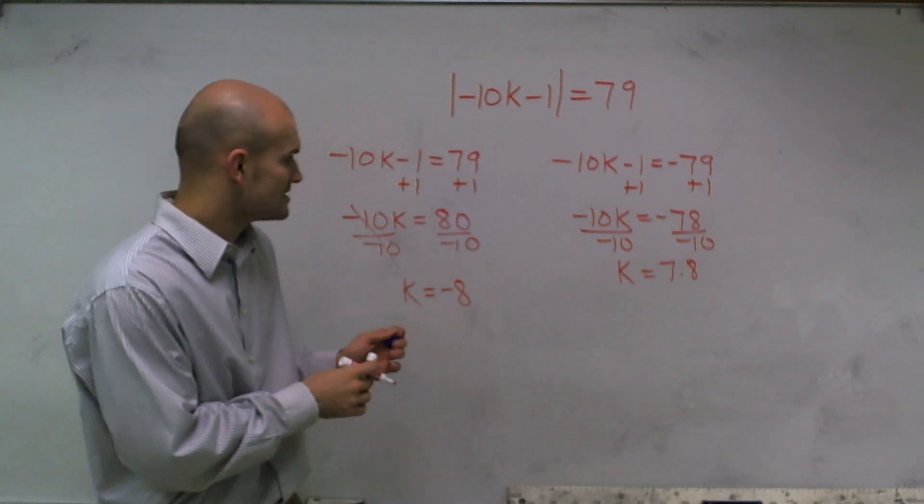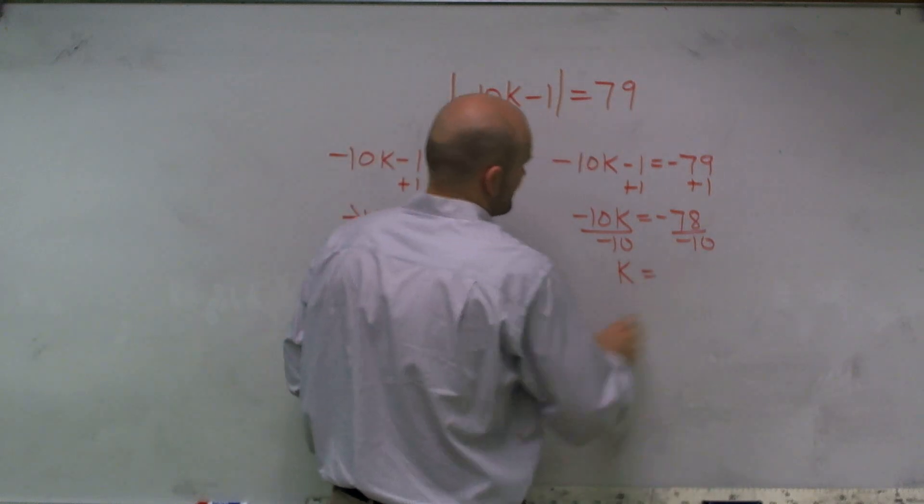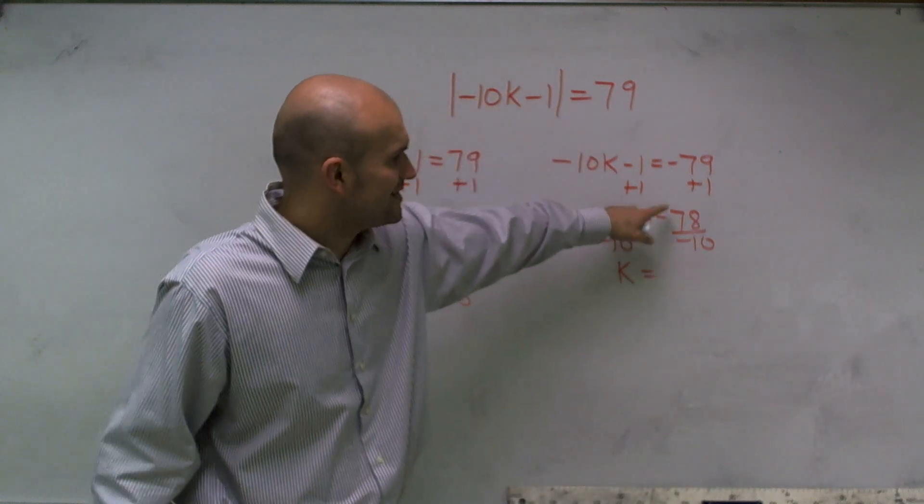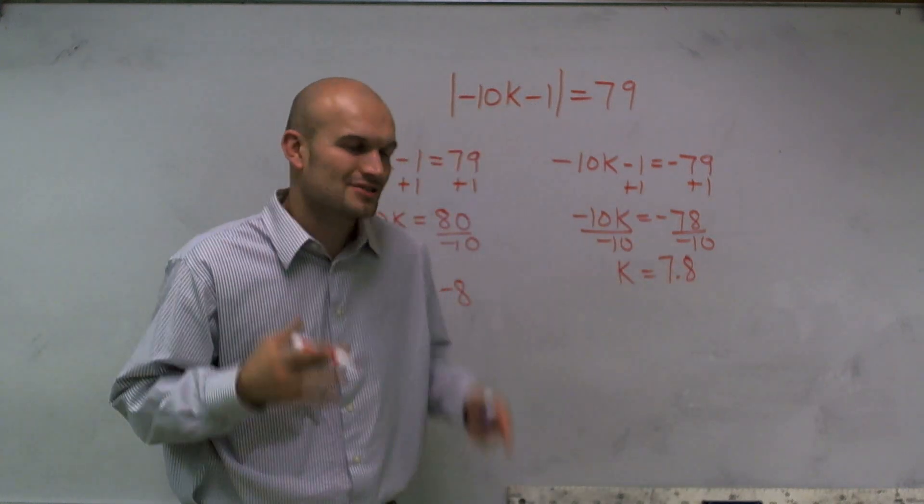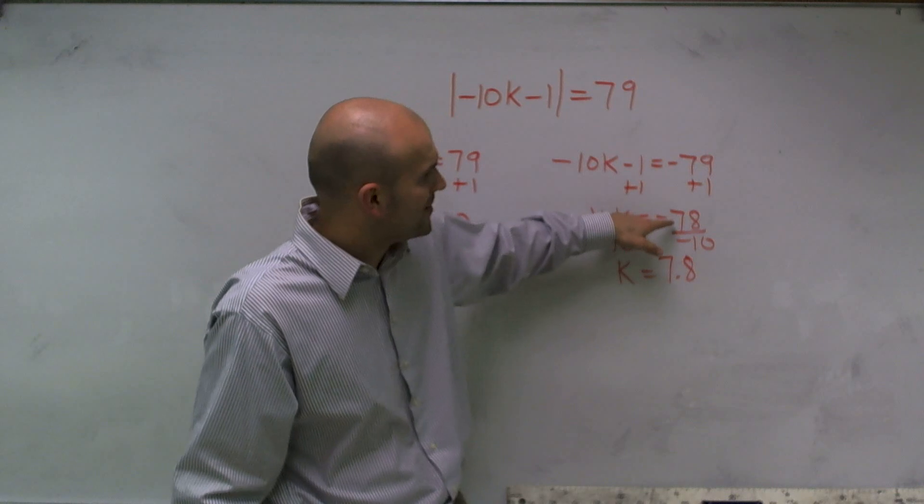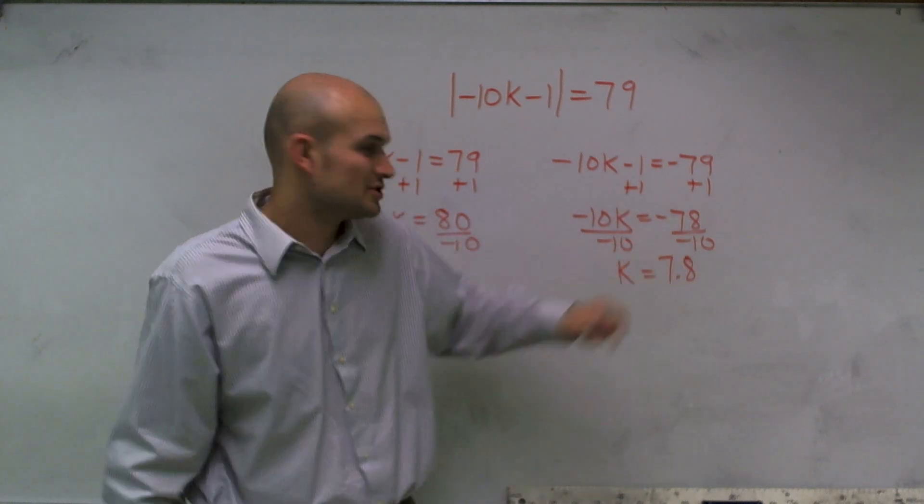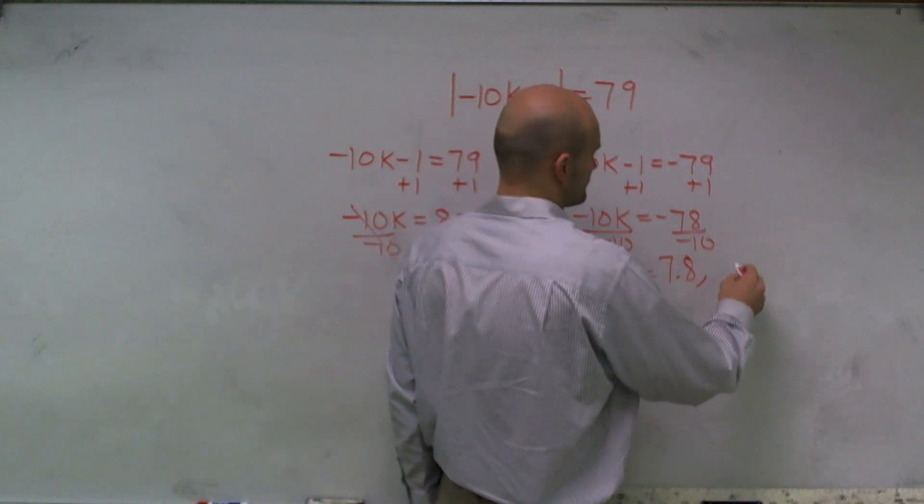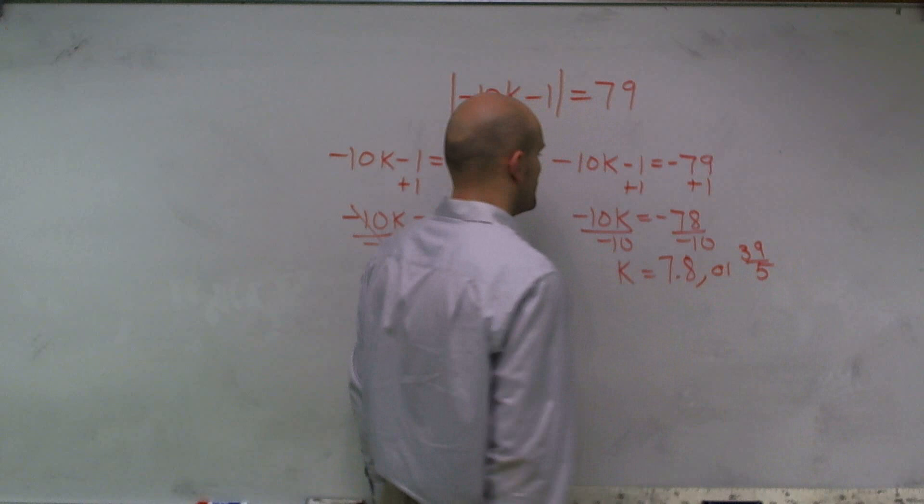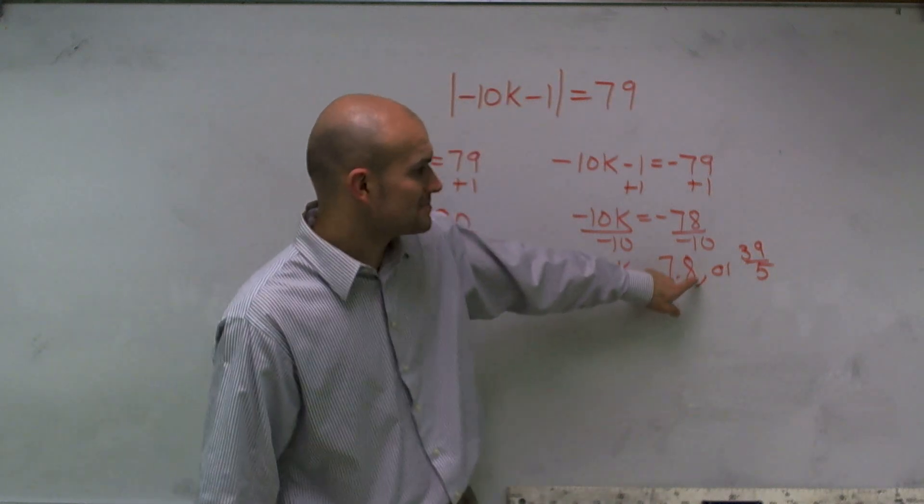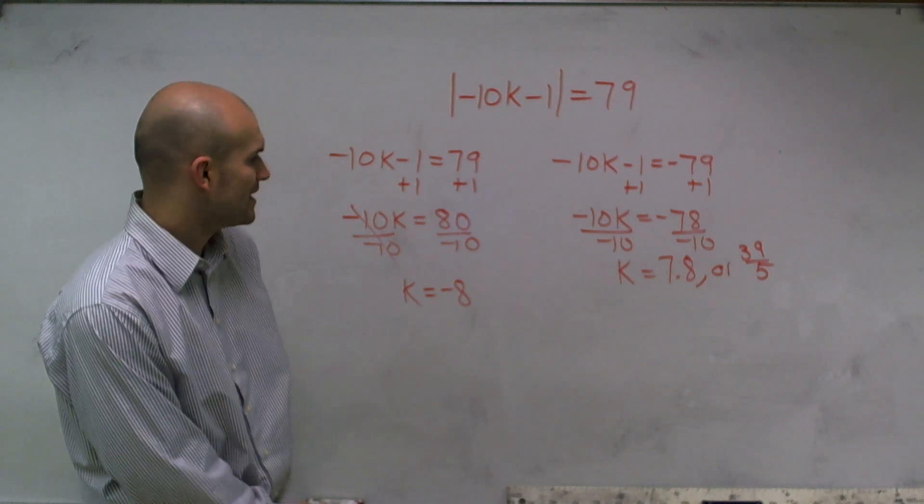And therefore, what I notice is... well, I should keep it as a fraction, right? Therefore, I'll leave the 7.8, but let me actually just give you the fraction representation because that's what I'm so used to. 78 divided by 10 can be reduced to 39 over 5. So you can either have your decimal version or the fraction - a more exact answer is 39 over 5.